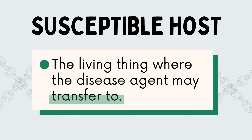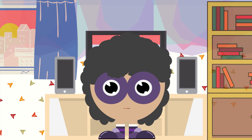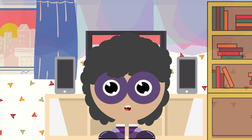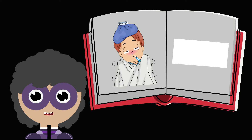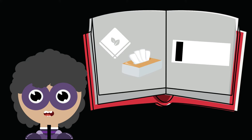A susceptible host can be anyone. Let's understand this further with a sample — the story of Francis and Vince. Francis and Vince are brothers who love to do things together, especially playing. One day, Francis was not feeling well and got influenza. Even though his parents asked him to rest, he still asked his brother to play with him, so they decided to play with their toys. While playing, Francis kept on sneezing and coughing and even forgot to cover his nose and mouth using a handkerchief or tissue. The two didn't mind it and continued playing.